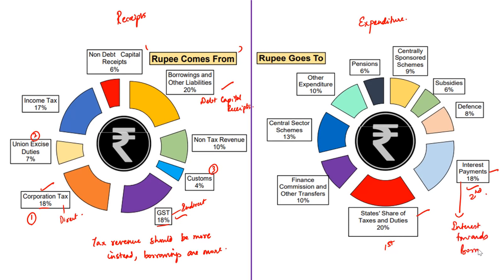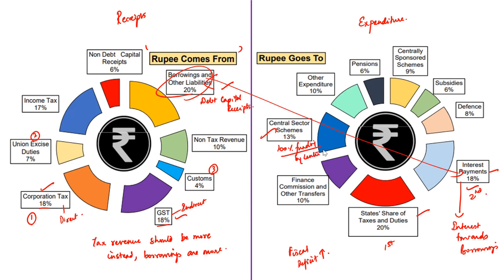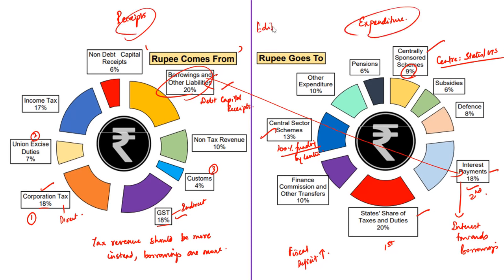Interest payment is nothing but the government paying interest towards its borrowings, which will further increase borrowings to meet the fiscal deficit. The government is going to spend more on central sector schemes — those funded 100 percent by the central government — at around 13 percent, and around 9 percent on centrally sponsored schemes where the center funds a portion alongside the state government or union territory. These are important facts from a prelims point of view, and we will discuss revenues and expenditure further with the help of an editorial later.